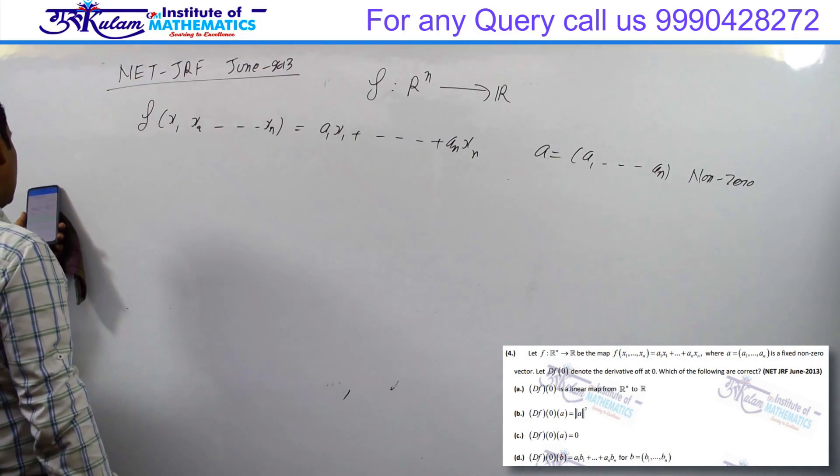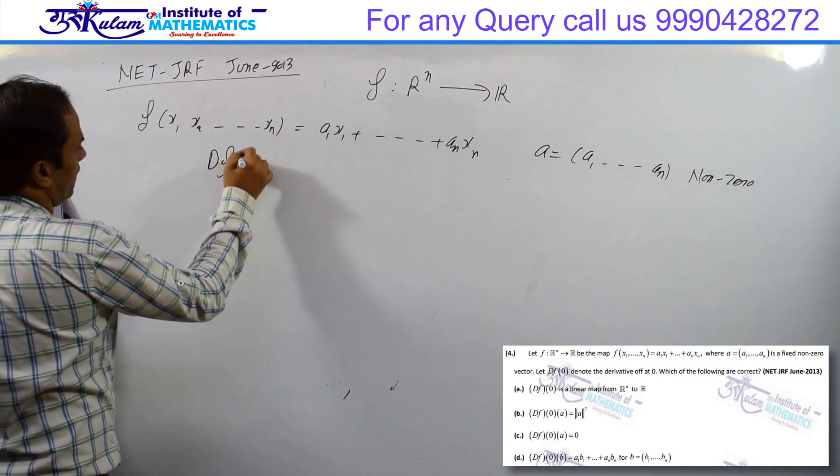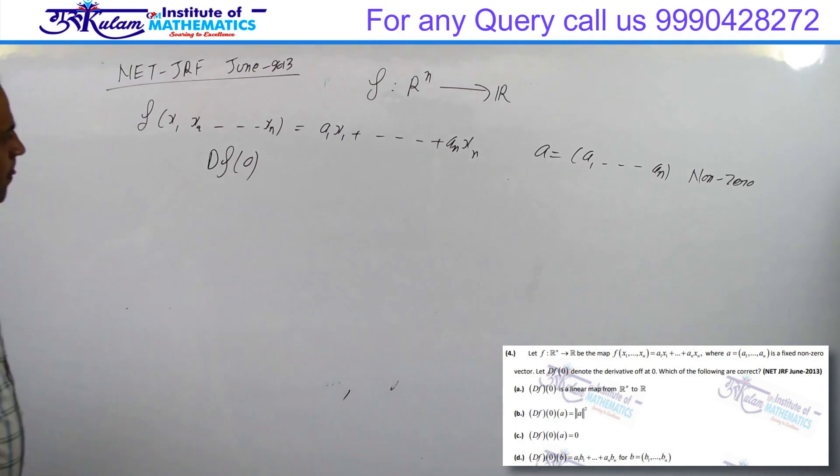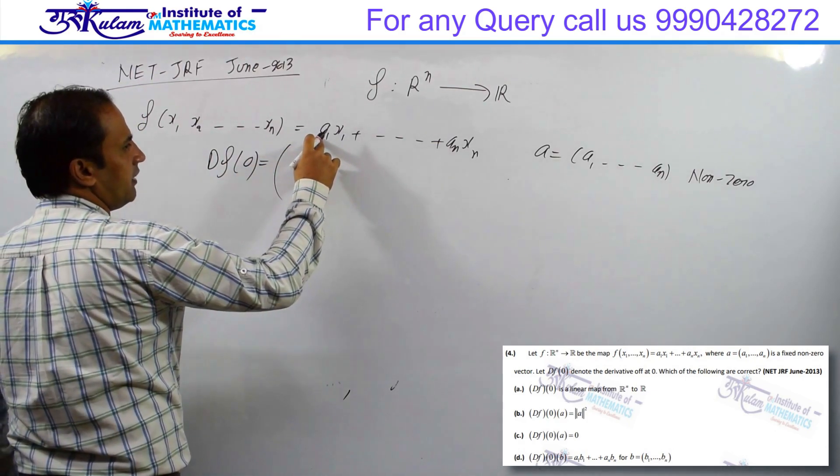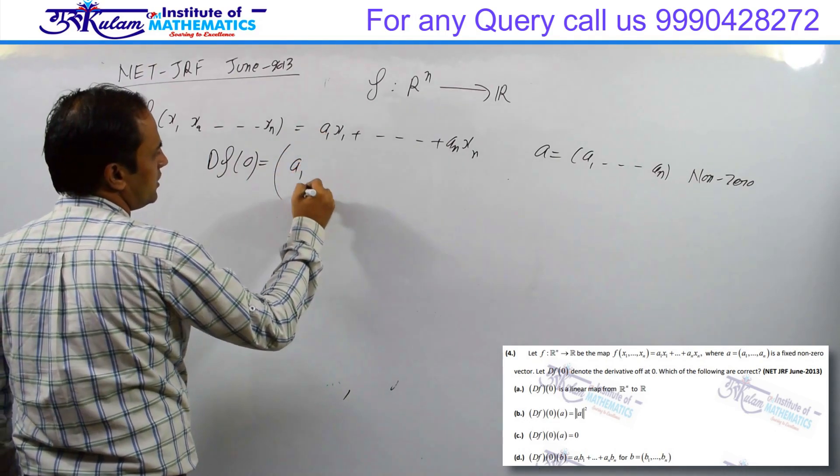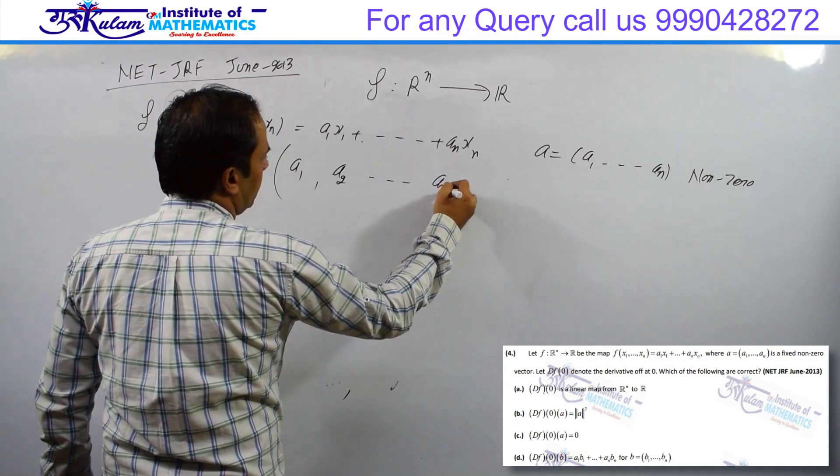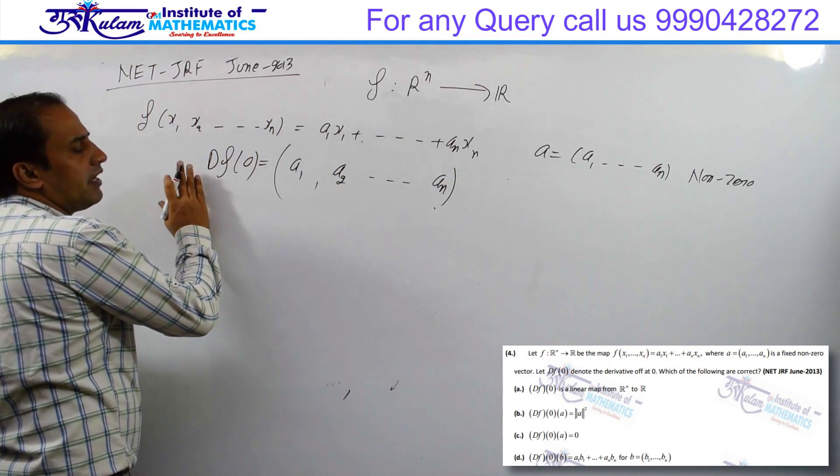And df0 denotes the derivative. So df0 is the derivative of f. We can directly calculate this - the partial derivative with respect to x1 is a1, partial derivative with respect to x2 is a2, and so on to an. This is basically a gradient vector.